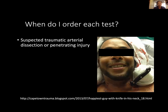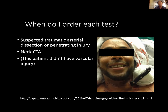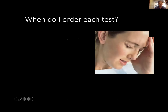For suspected traumatic arterial dissection or penetrating injury — such as a patient with a knife in the neck — you want to do a neck CTA to exclude vascular injury. This is the appropriate modality in penetrating trauma scenarios.